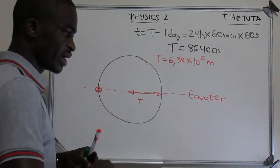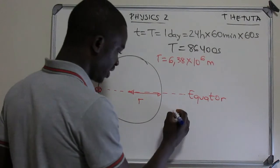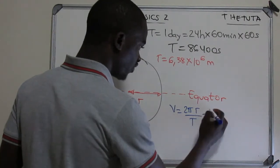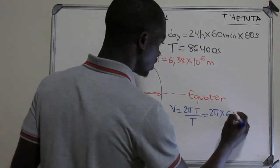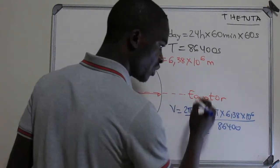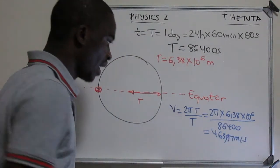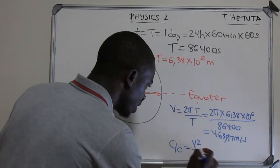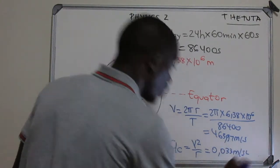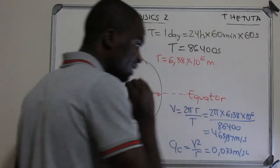The speed is given by v = 2πr/T. Substituting: 2π × 6.38 × 10⁶ divided by 86,400, we get the speed to be 463.97 meters per second. The centripetal acceleration is v²/r, and substituting the values gives a centripetal acceleration of 0.33 meters per second squared.